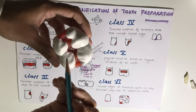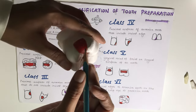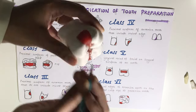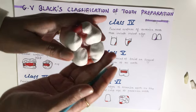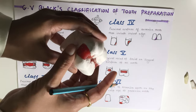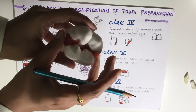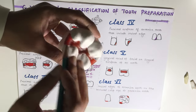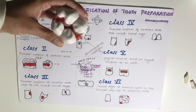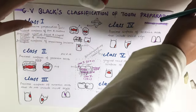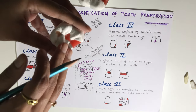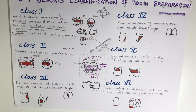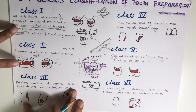A MOD preparation involves both the mesial and distal proximal surfaces along with the occlusal, and since both are proximal surfaces this is still a Class 2 tooth preparation. The Class 2 conservative tooth preparation concept applies here just as it does in Class 1.